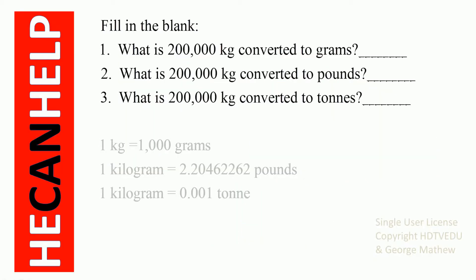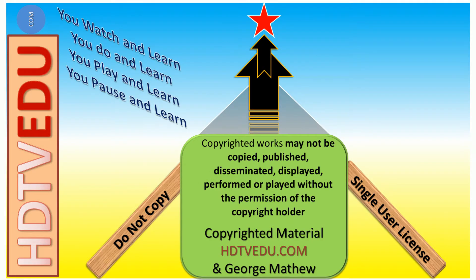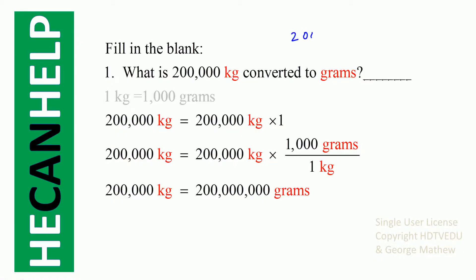Fill in the blank: number one, what is 200,000 kg converted to grams? Number two, what is 200,000 kg converted to pounds? Number three, what is 200,000 kg converted to tons? We are given the conversions: 1 kg equals 1,000 grams; 1 kg equals 2.20462262 pounds; and 1 kg equals 0.001 tons. We have to convert 200,000 kg.